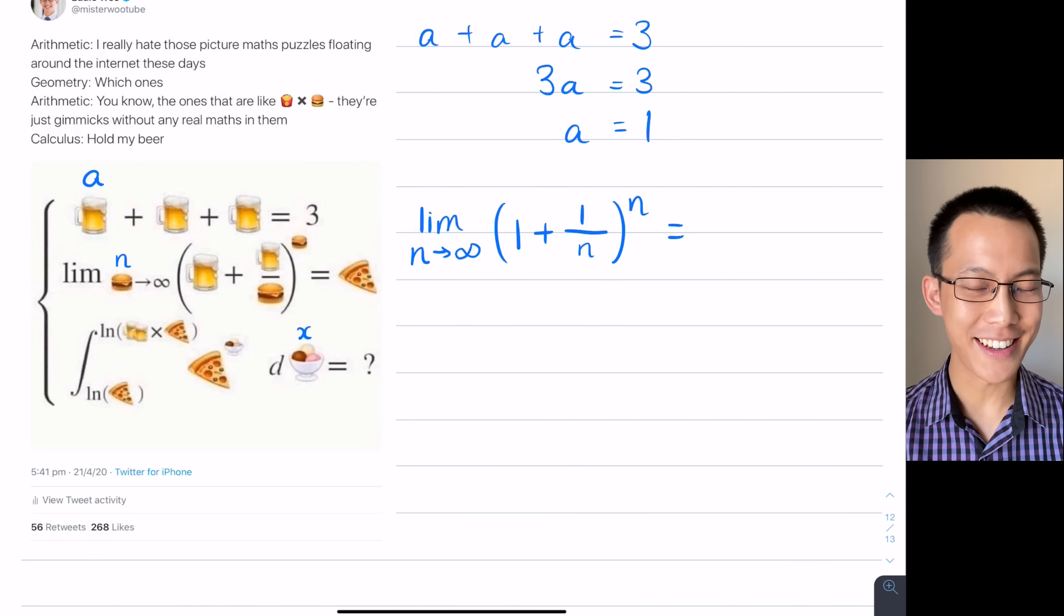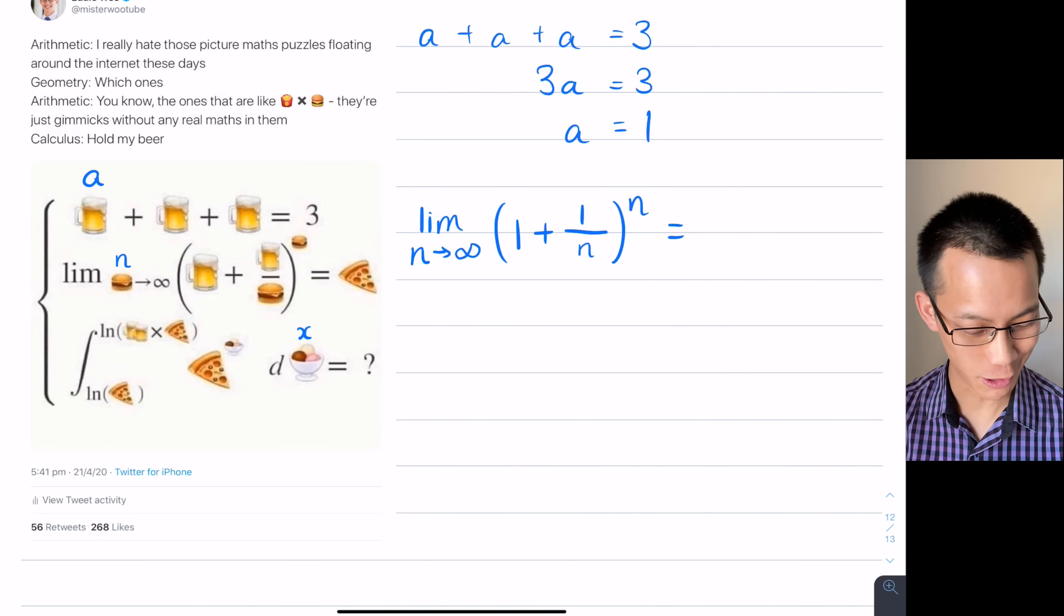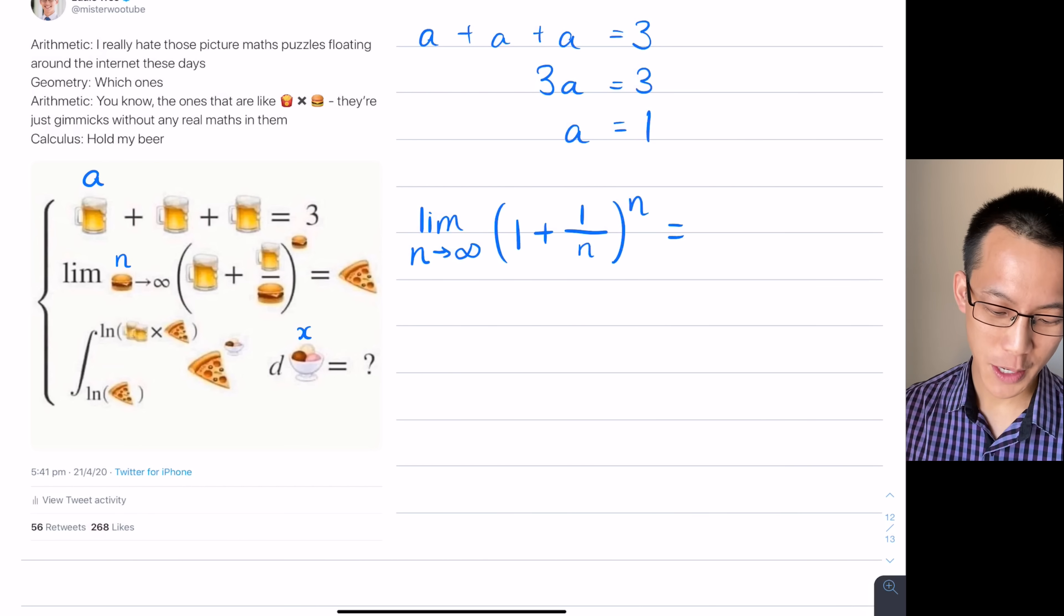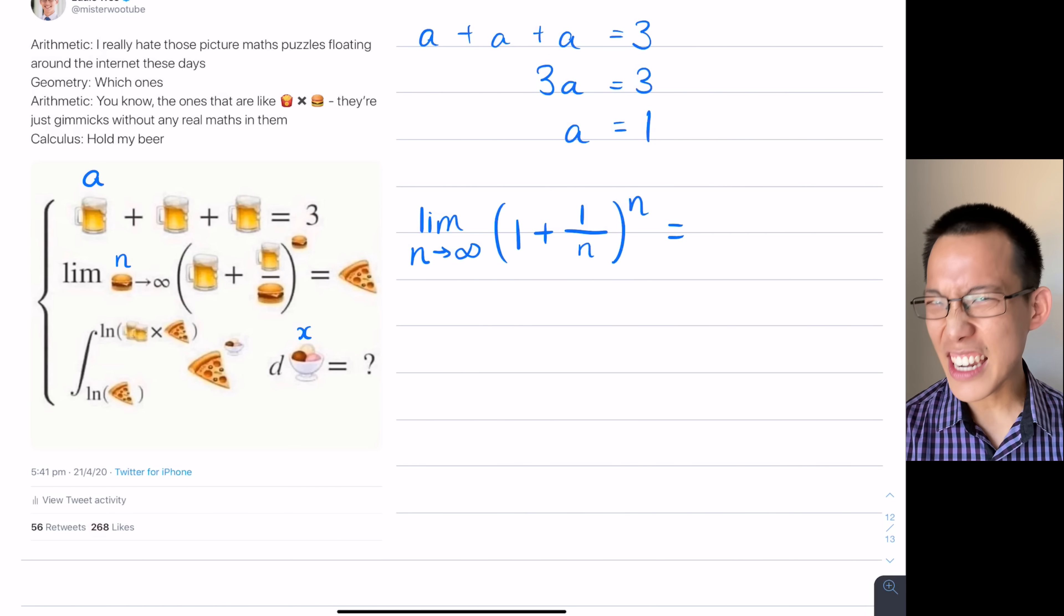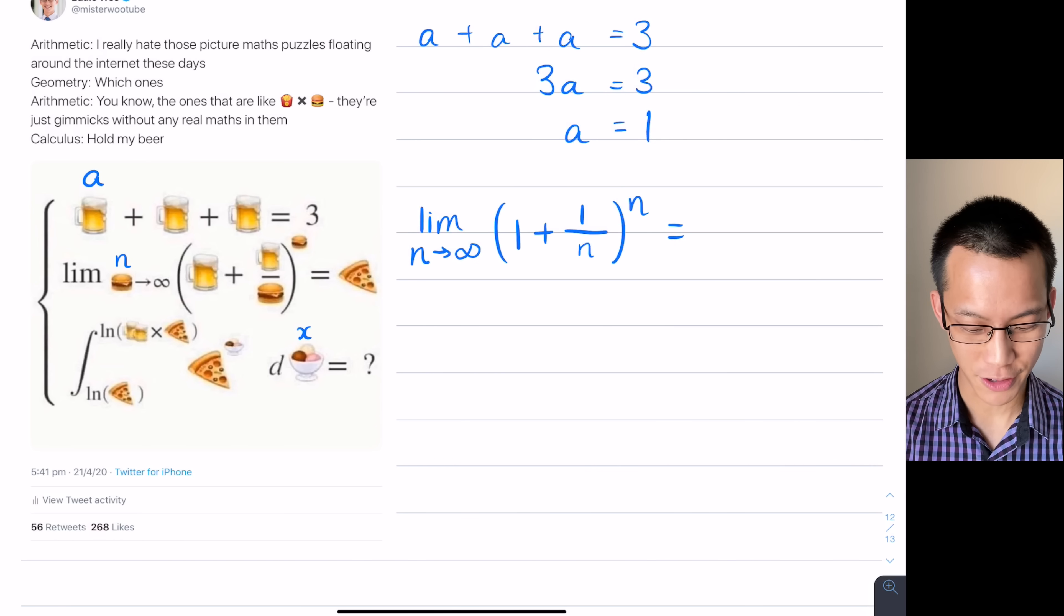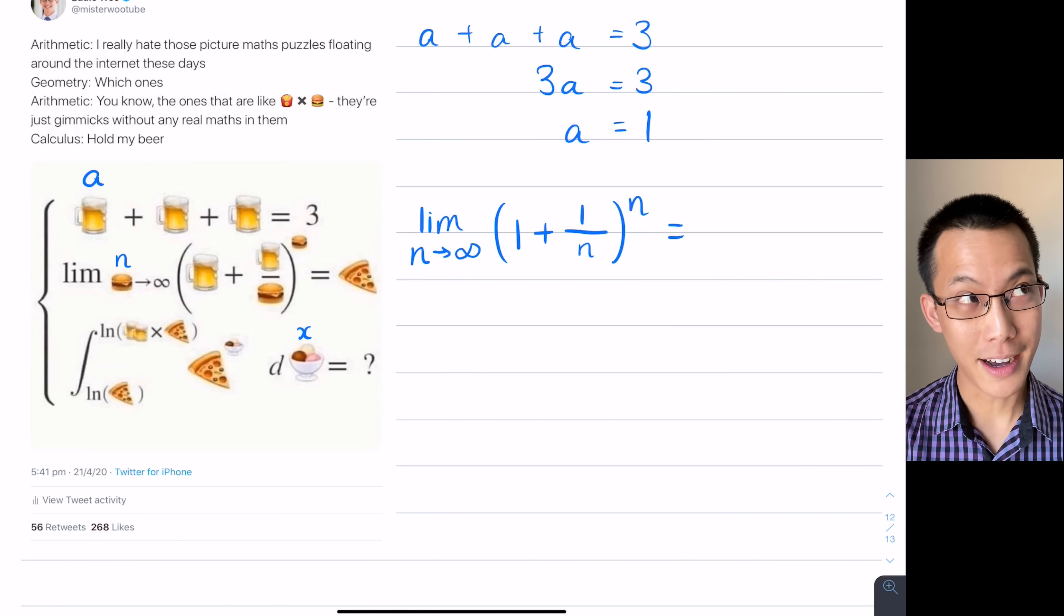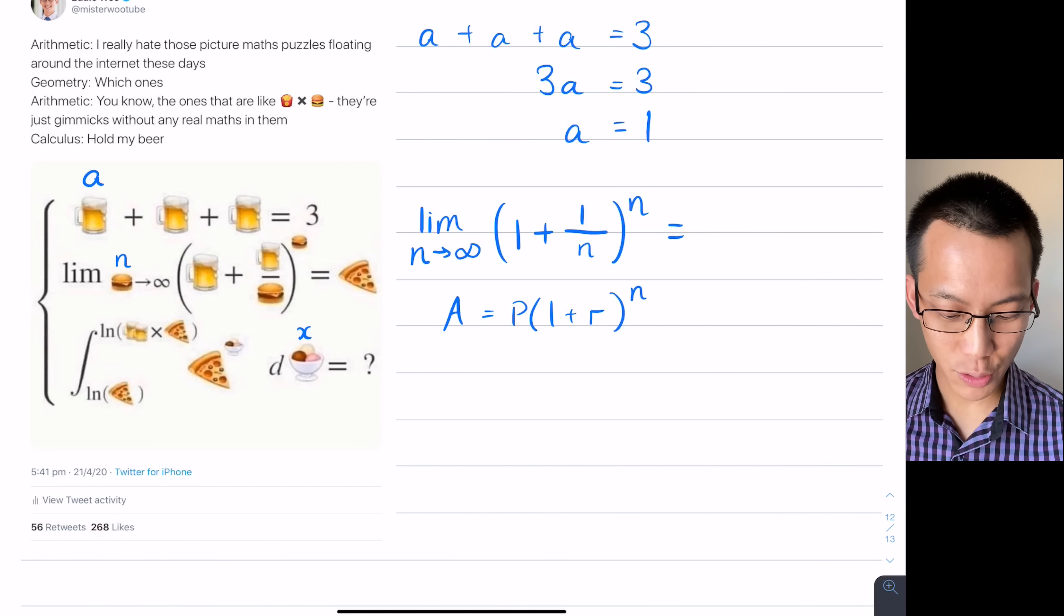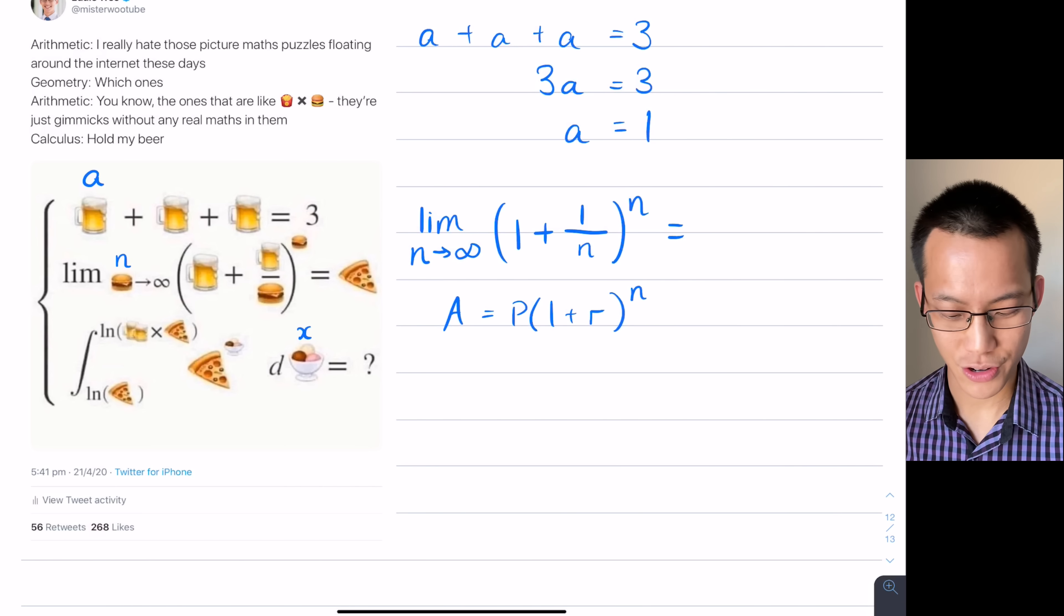Now here's the thing. There's some knowledge that is required here to be able to look at this and quickly solve it. This result here is actually kind of among mathematicians a famous result. What you've got in here is kind of like a compound interest situation. You might be familiar with A equals P times one plus R to the N. That's a compound interest formula. And essentially what you're looking at here is kind of a variation on that.